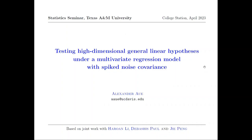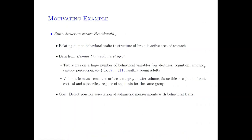I would like to motivate what comes in the next few minutes by going through one of the data examples that we studied in the context of the modeling. In particular, we've been looking at data from the Human Connectome Project, where we look at about 1,000 healthy young adults and we look at different variables on behavior: alertness, cognition, emotion, sensory perception, and others. We also look at brain measurements — surface area, gray matter volume, tissue thickness — for different cortical and subcortical regions.